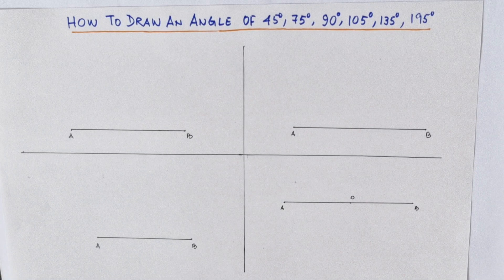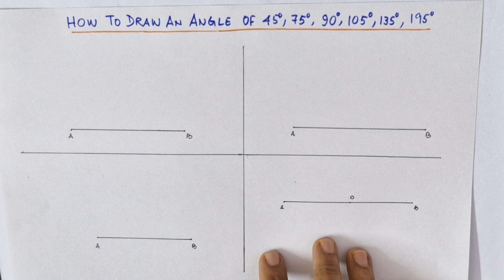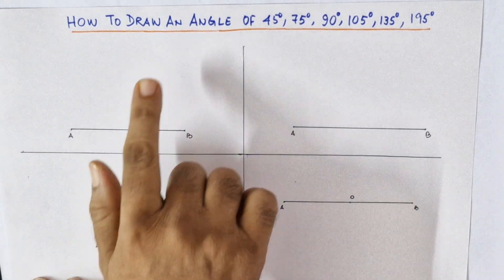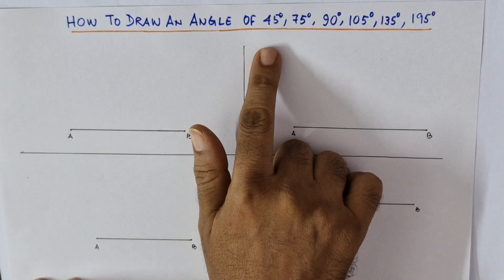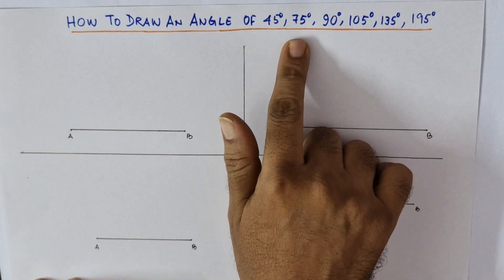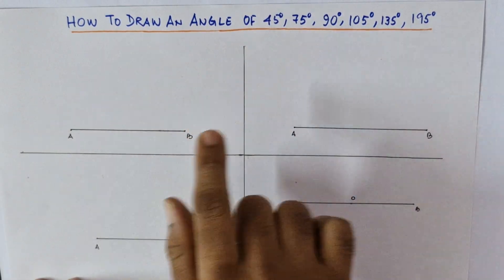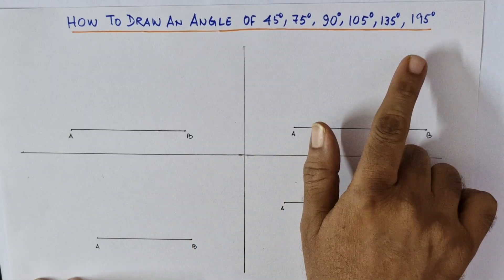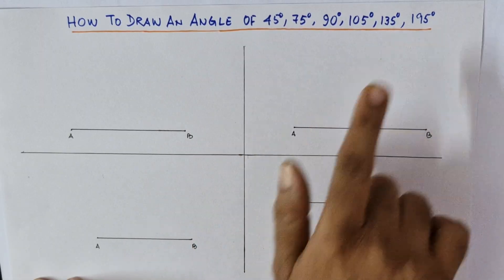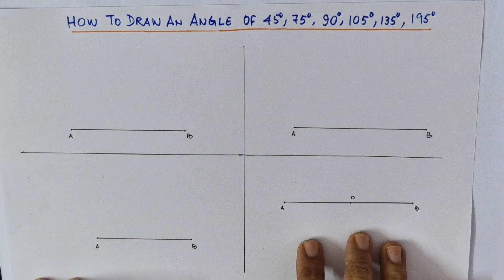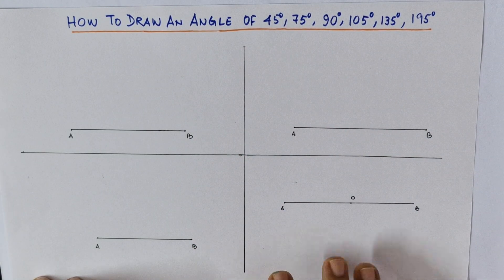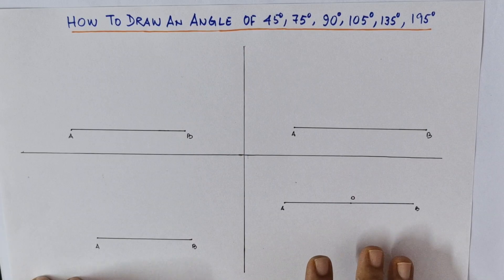Hello everyone and welcome back to Fun Mathology. Today's topic is how to draw an angle of 45 degrees, 75 degrees, 90 degrees, 105 degrees, 135 degrees, and 195 degrees with compass only. So let's see how to do them.